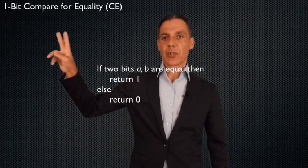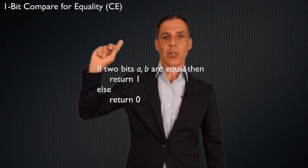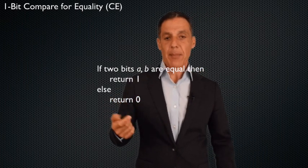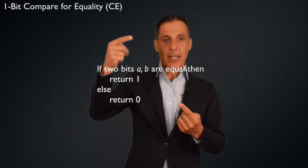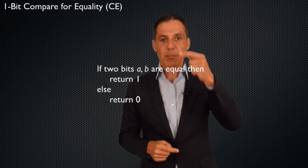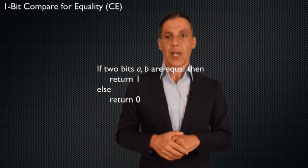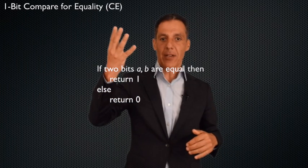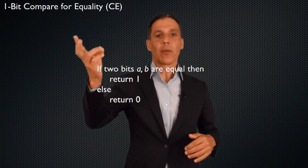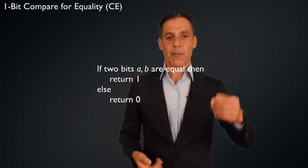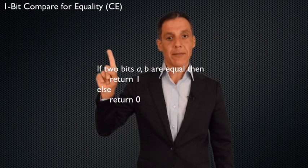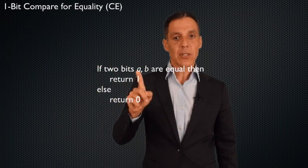So we're going to build what's called a one-bit compare for equality, a CE circuit. So what do I mean, first of all, by one bit? I mean my inputs are a and b, which are each a single bit. It's either 0 or 1. A four-bit compare for equality, which we'll do in a little bit, would be that I have a is 0, 1, 1, 0, and b, for example, is 1, 1, 0, 0. And all I want to do is ask, are these two one-bit values, a and b, equal or not?